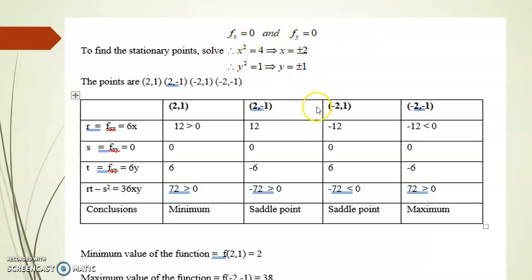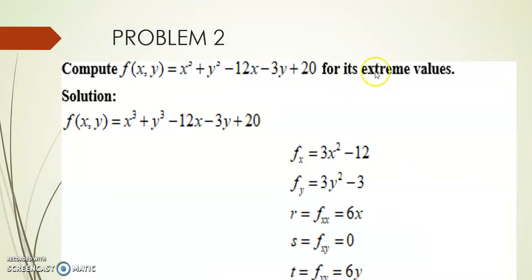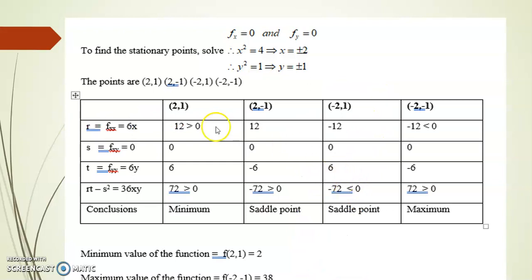To find critical points, equate fx = 3x² - 12 = 0 and fy = 3y² - 3 = 0. Solving these gives four points: (2,1), (2,-1), (-2,1), and (-2,-1).